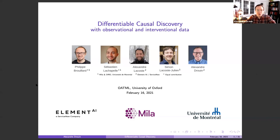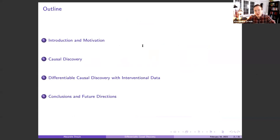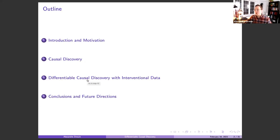This is joint work with my collaborators Philippe Brouillard, Sébastien Lachapelle, Alexandre Lacoste, and Simone Lacoste-Julien. My talk will be structured as follows: I will start with a brief introduction to causal inference and use that to motivate the problem of causal discovery. Then I'll present causal discovery and finish by presenting our recent paper called Differentiable Causal Discovery with Interventional Data. Feel free to ask questions — I'll pause at the end of each section.